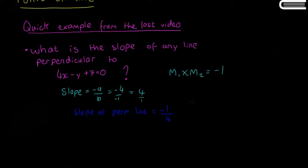So the equation of any line perpendicular to this one is y = -1/4x + k, where k can be any constant.